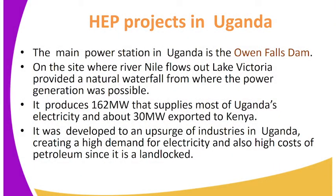Our sub-topic is hydroelectric power projects in Uganda. The main power station in Uganda is the Owen Falls Dam. On the site where River Nile flows out of Lake Victoria, it provided a natural waterfall from where power generation was possible. It produces 162 MW that supplies most of Uganda's electricity.